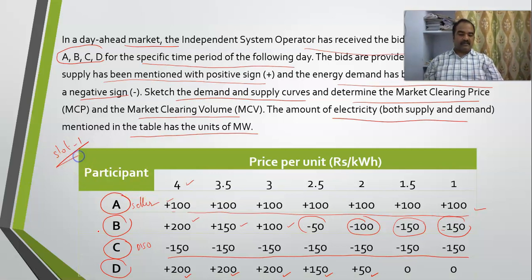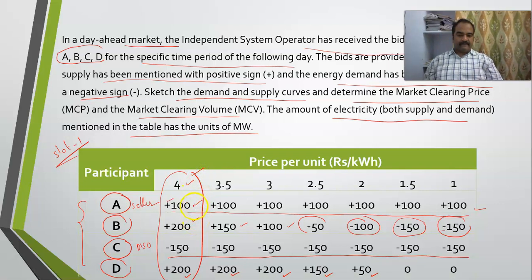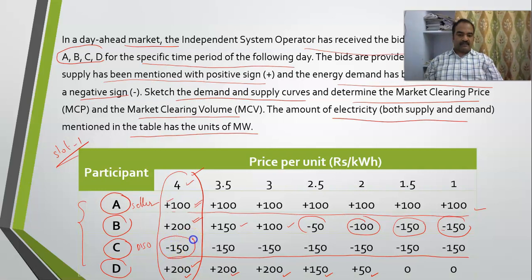How do we draw the supply and demand curves? The first step when you receive these types of bids is: for every price, some people are selling and some people are buying. At a price point of four rupees, if you carefully see, there are three sellers — the sum of their quantities is called the accumulated supply — and there is one buyer, which we call the accumulated demand.